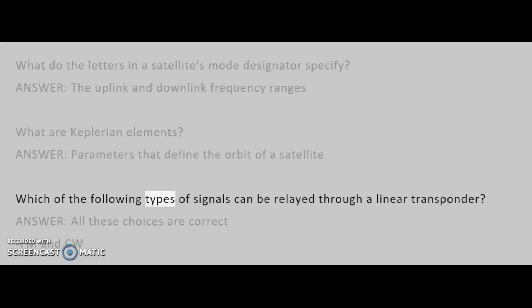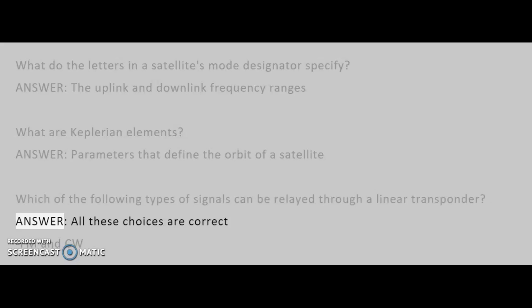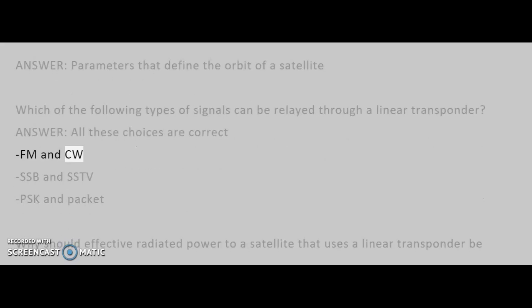Which of the following types of signals can be relayed through a linear transponder? Answer: All these choices are correct — FM and CW, SSB and SSTV, PSK and Packet.